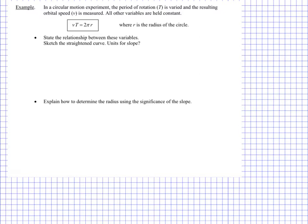We have a circular motion experiment. So the period of rotation, which is T, is varied. Let's just make a note of this - T is being varied, so this is the manipulated variable. And if you're manipulating something, you're going to probably put it on the x-axis.